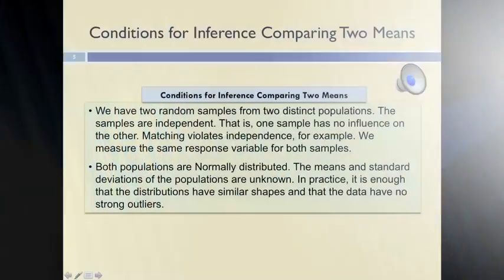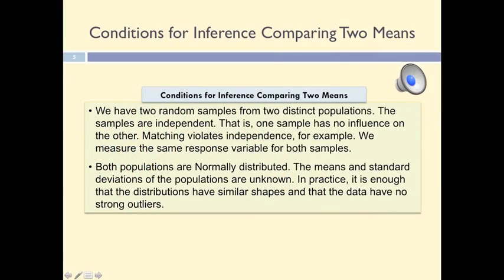Before conducting any statistical analysis we must make sure that we meet two assumptions. The first one is that the two samples were randomly selected and are independent from one another. The second assumption is that the variable that we are measuring has a normal distribution in both populations.